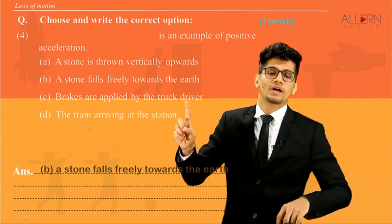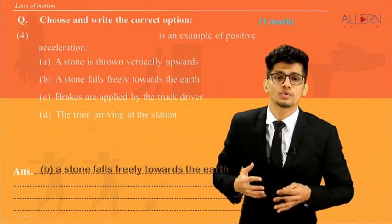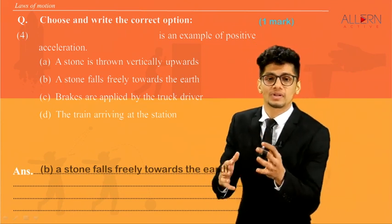Brakes are applied. We know when we apply brakes, velocity decreases. Train arriving at the station will have to reduce its speed so that it actually stands or actually comes to rest at the station.